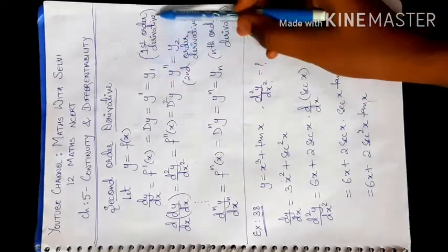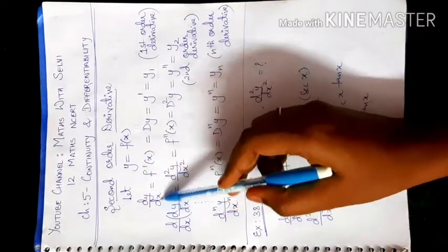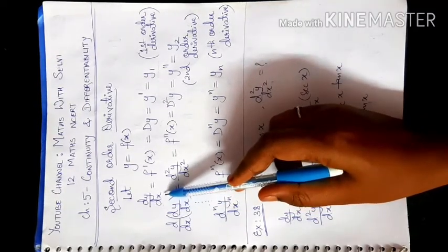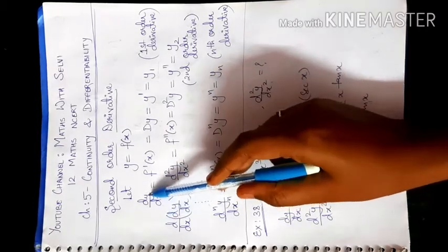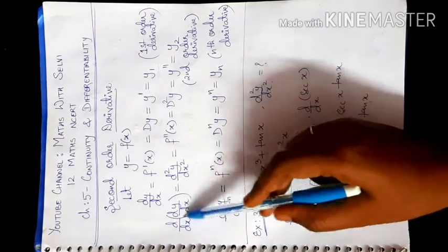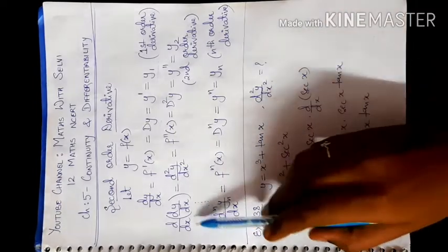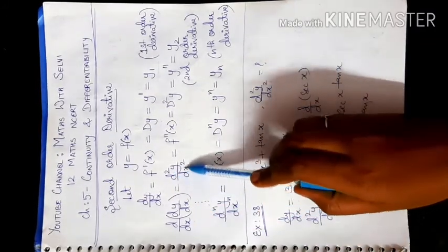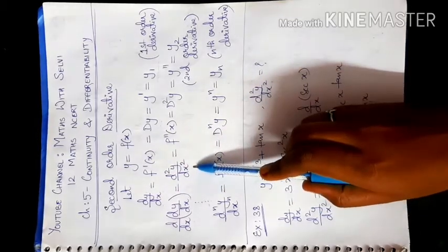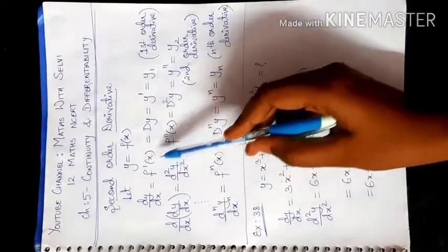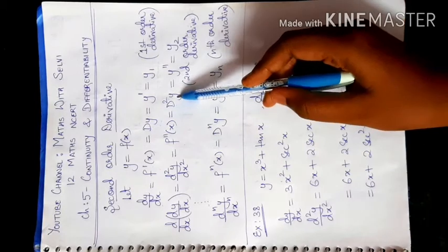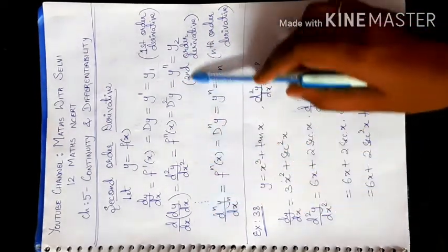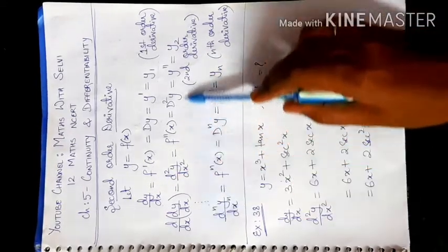In the first order derivative, we talk about dy/dx. Then, again differentiating with respect to x — if it is differentiable — we have to differentiate dy/dx again with respect to x. So, it can be written as d by dx of dy by dx, which gives d²y/dx². This is called the second order derivative, and it can also be written as f''(x), or y double dash, or y2.